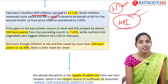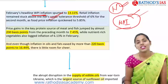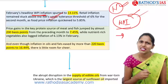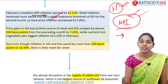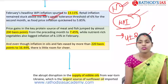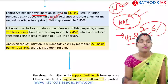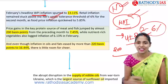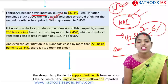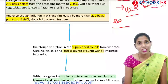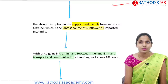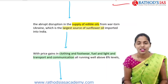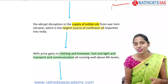Retail inflation has reached the upper threshold limit of the RBI, which is 6%. India's inflation targeting is 4 ± 2%, meaning 2% to 6%. The price of key protein sources such as meat and fish is also very high — there is a 200 basis points increase in prices. Oil and fats are also showing an inflationary effect, leading to increasing prices.